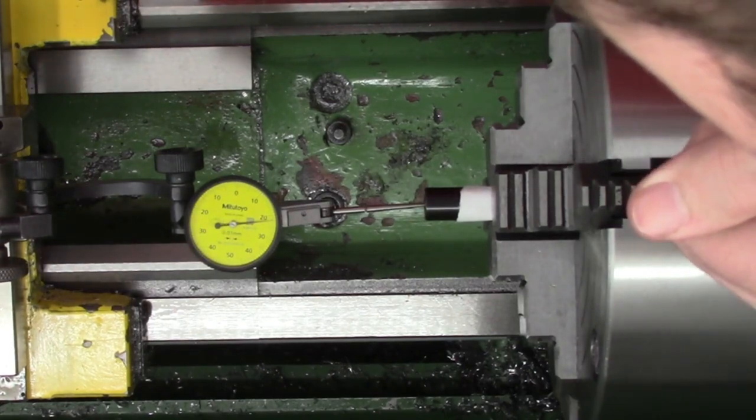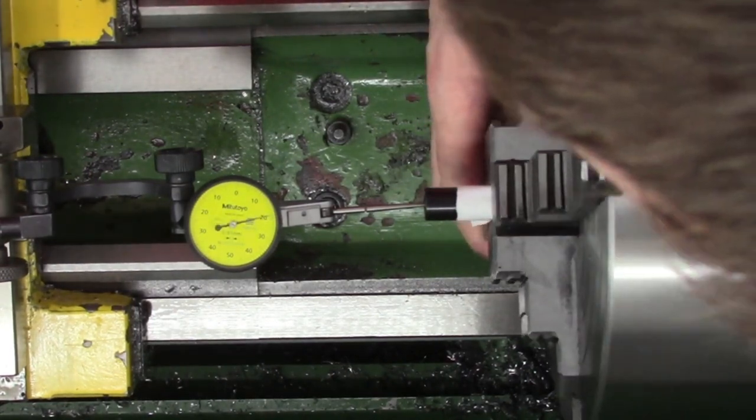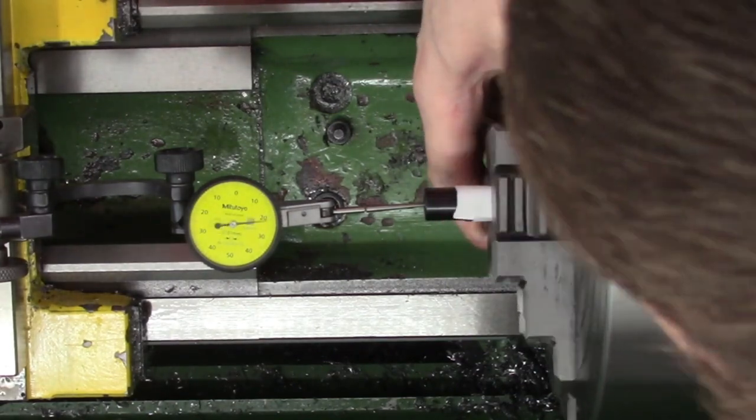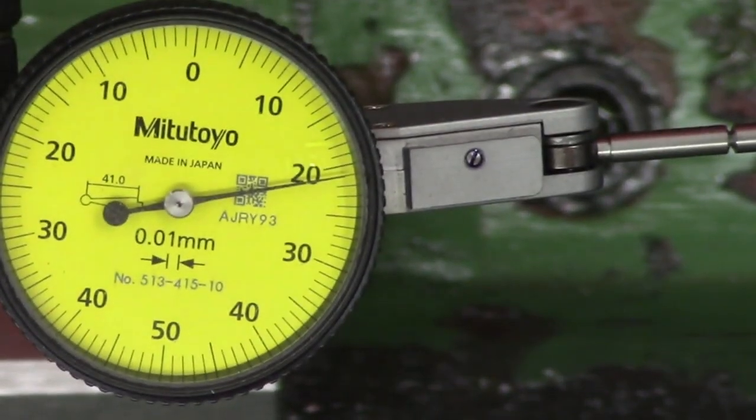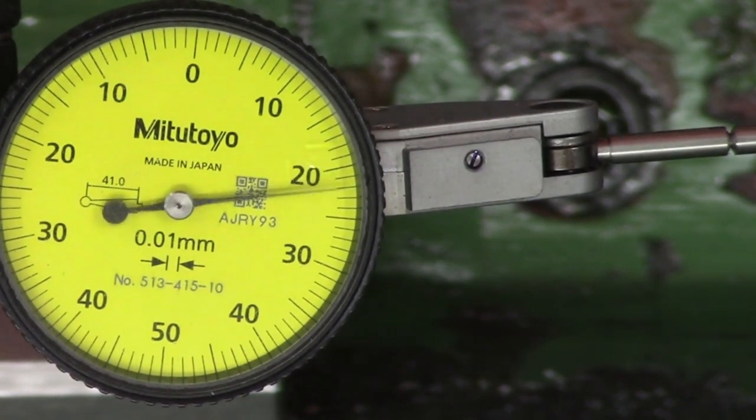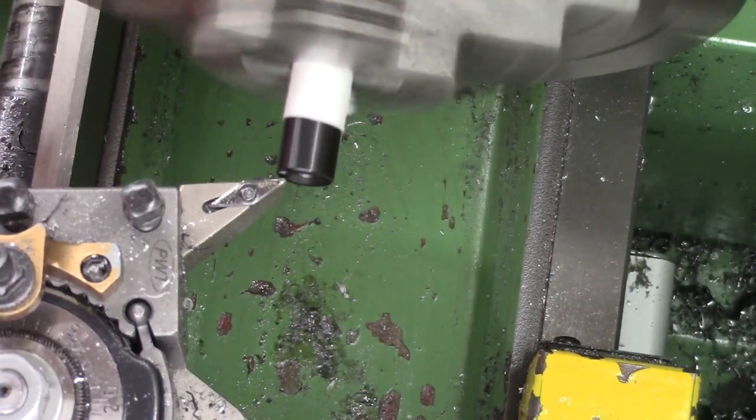First thing we're doing is setting it up in the four-jaw, nice and simple, just tightening the highs and loosening the lows, getting it to around 10 microns. Then once we have it running nice and true, we move the indicator a little further in the bore and check the concentricity over two points. What this does is make sure the barrel is axially aligned with the lathe.